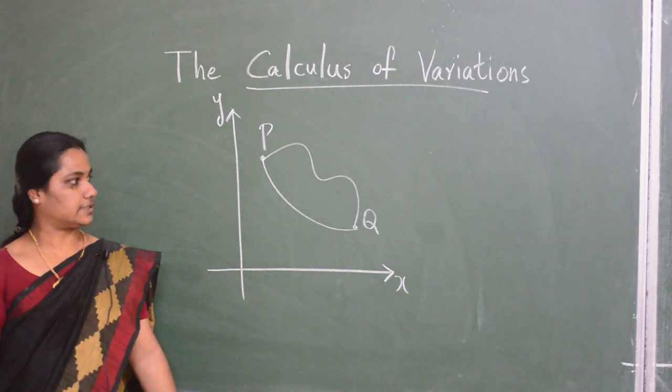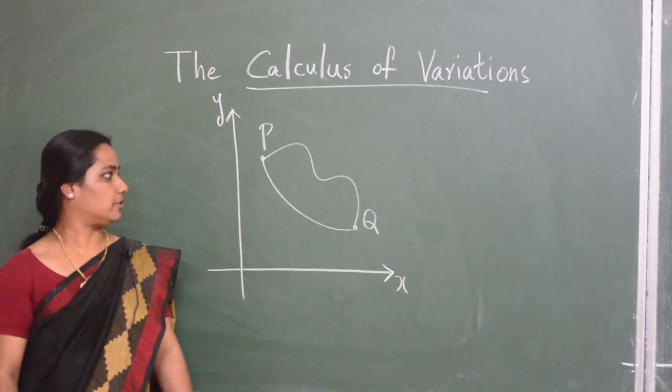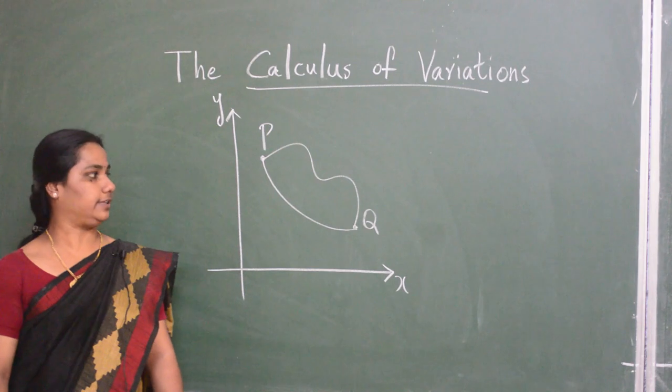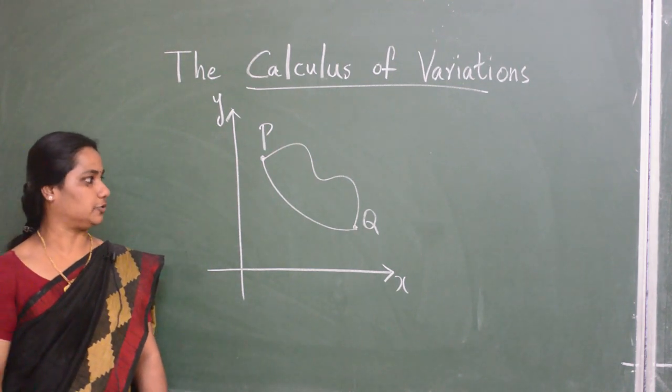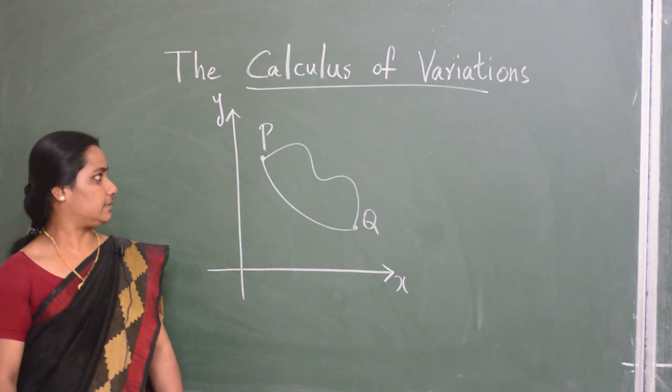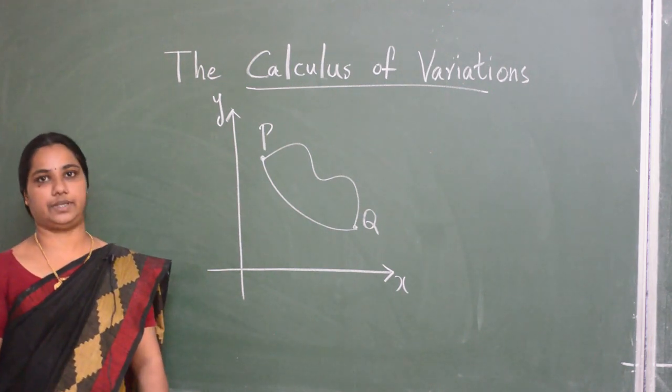The first problem is the problem of finding the curve of shortest length joining two points P and Q lying on a plane. As we all know, it is the straight line joining the points P and Q.